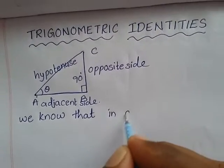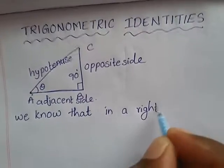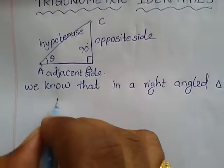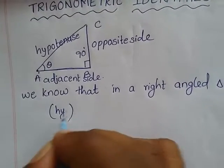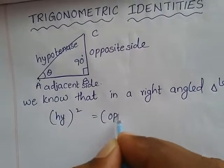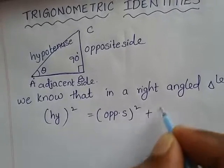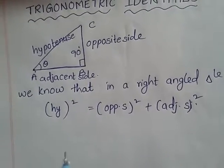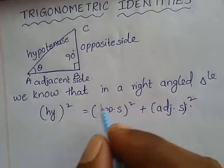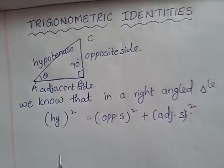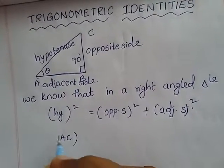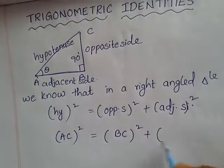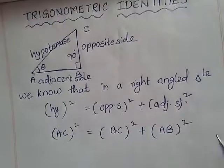In a right angle triangle, the hypotenuse side square is equal to the opposite side square plus the adjacent side square. Here, opposite is BC, adjacent is AB, and hypotenuse is AC, so AC square is equal to BC square plus AB square.